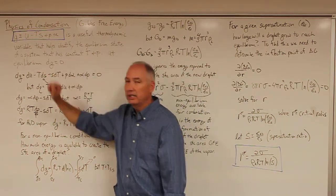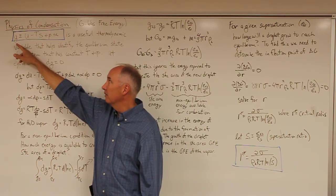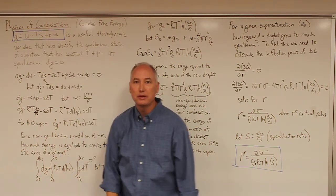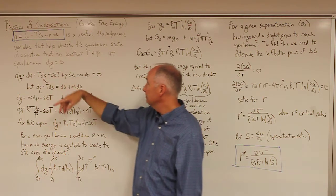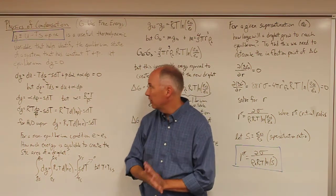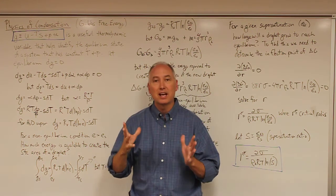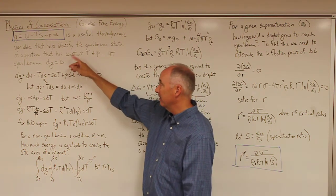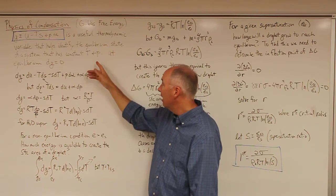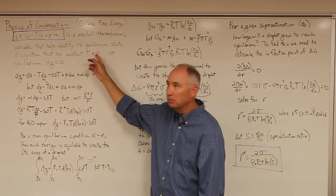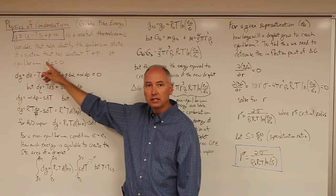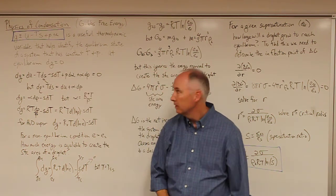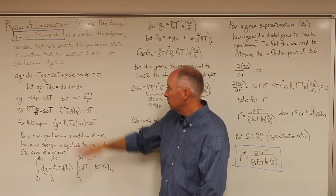The Gibbs free energy per unit mass, in lowercase letters, is defined as the internal energy of the system minus T times the entropy of the system plus p·alpha. It's a very useful thermodynamic variable because it helps identify the equilibrium state of the system at constant temperature and pressure. At equilibrium, at constant temperature and pressure, the differential of the Gibbs free energy function is equal to zero.